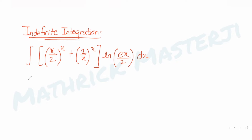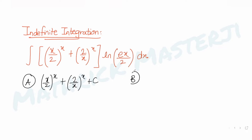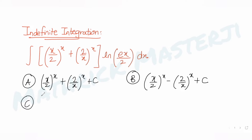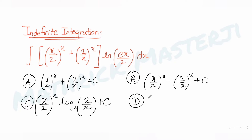The answer choices given are: Option A — x/2 to the power x plus 2/x to the power x plus c; Option B — x/2 to the power x minus 2/x to the power x plus c; Option C — x/2 to the power x times log(2/x) to the base 2 plus c; and Option D — none of them. We need to figure out the correct answer.